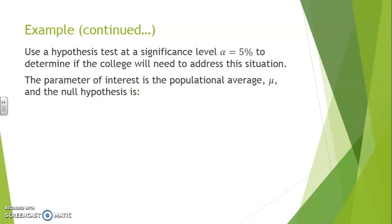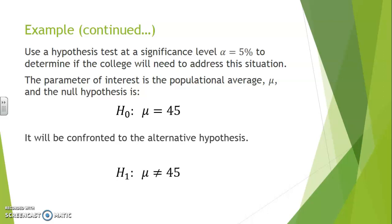Use a hypothesis test at a level alpha 5% to determine if the college will need to address the situation. This hypothesis test has, as its parameter of interest, the populational average mu, and the null hypothesis is that mu equals 45. It will be confronted with the alternative hypothesis where mu is unequal to 45, which is its opposite statement.